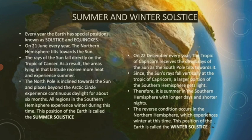The North Pole is inclined towards the Sun and places beyond the Arctic Circle experience continuous daylight for about six months. This particular position is called summer solstice.